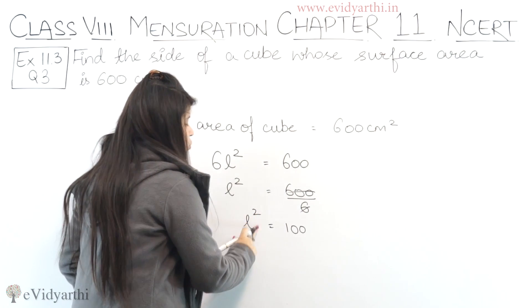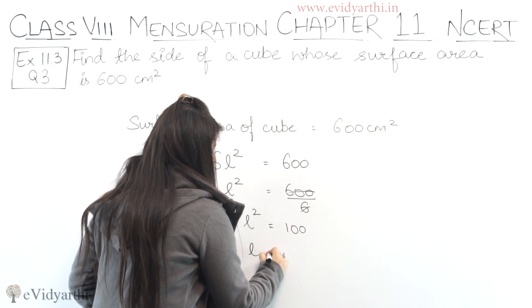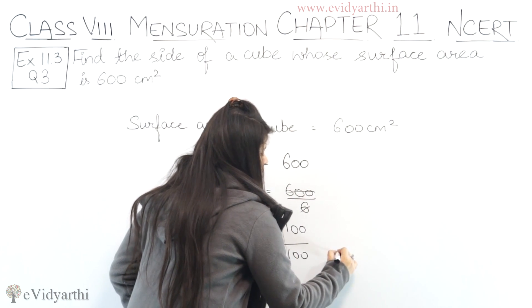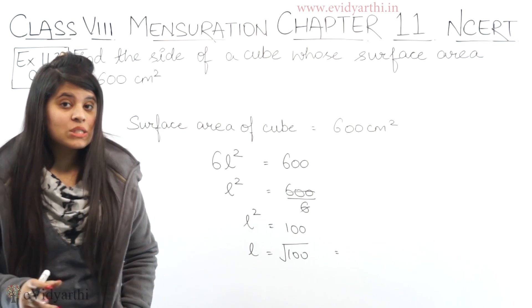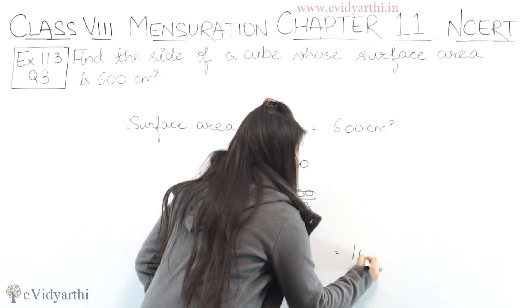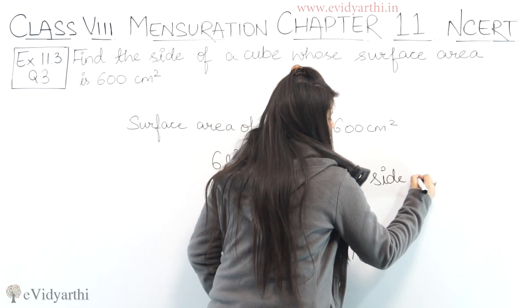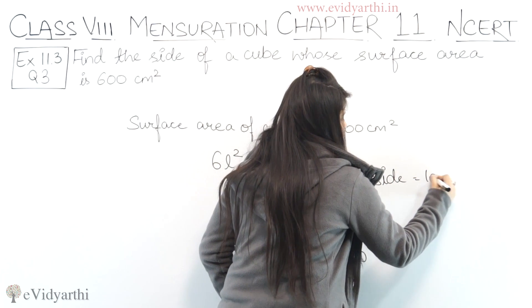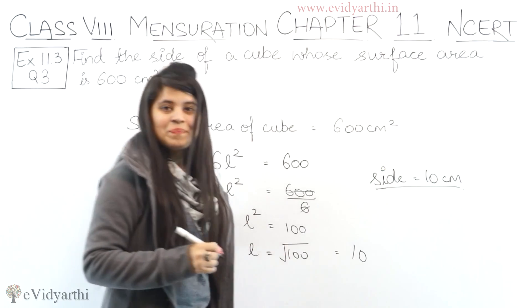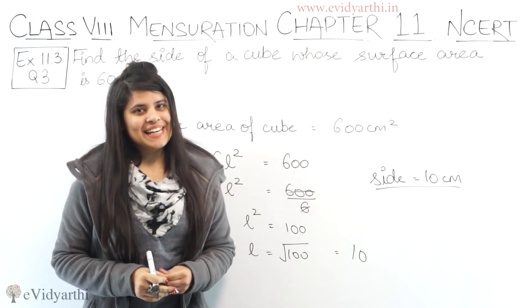Now we take the square root, so L equals the square root of 100, which is 10. So the side comes out to be 10 centimeter. So this was question number 3, now let's come to the next question.